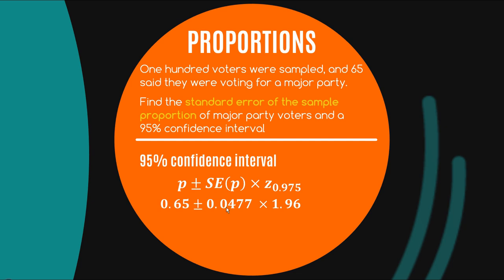So instead of using equals T.INV, I'm now using equals NORM.S.INV in Excel, which is the standard normal distribution, simply a normal distribution with mean zero and standard deviation one. So p is 0.65, you sub in everything there. Turns out if you put that into Excel, you'll get 1.96. And voilà, you'll get 0.557 and 0.743 as your two limits here. So if you add this product to 0.65, you get 0.743, and if you subtract it, you'll get 0.557. So here we can say we're 95% confident that between 55.7% and 74.3% of voters will vote for major parties.